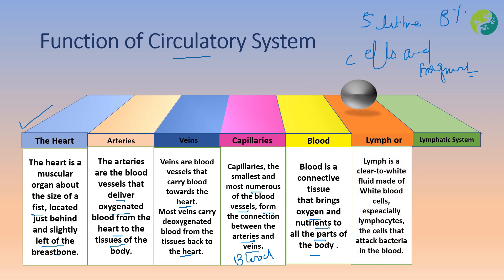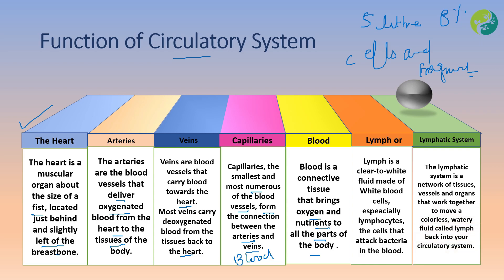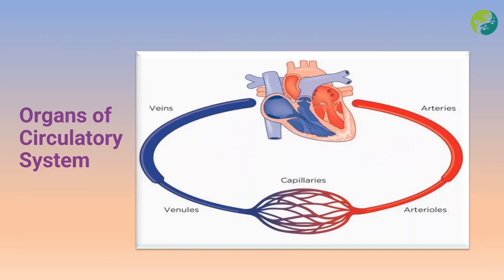Lymph is a clear to white fluid made up of white blood cells, especially lymphocytes — the cells that attack bacteria in the blood. The lymphatic system is a network of tissues, vessels, and organs that work together to move a colorless, watery fluid called lymph back into the circulatory system.